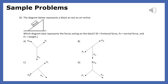A box sits on a ramp. Which choice shows the three forces that act on the box? The answer is choice A: Fn is the normal force, Ff is the friction force that prevents the box from sliding down the ramp, and Fw represents the weight force or the force of gravity, which points straight down.